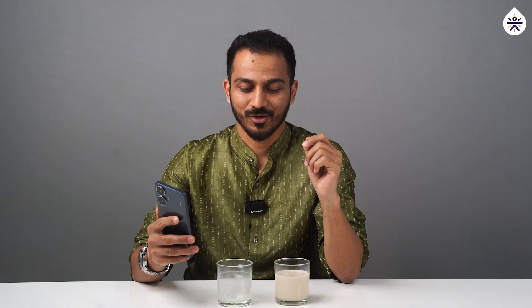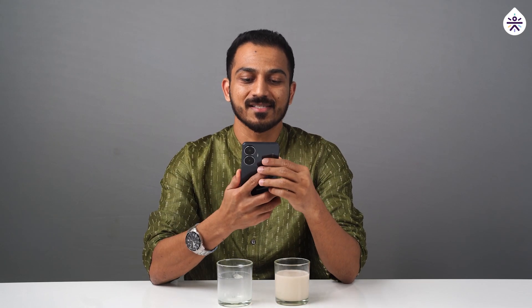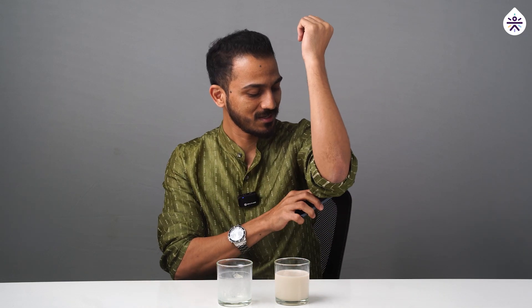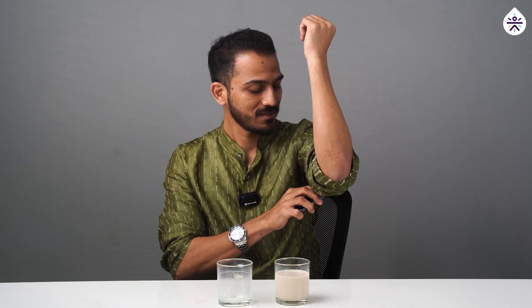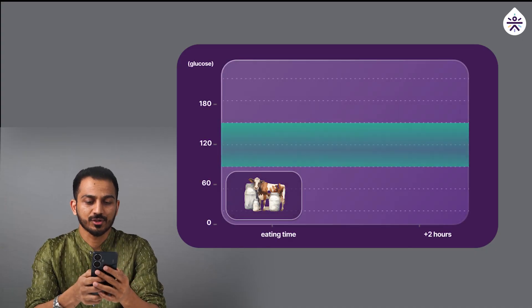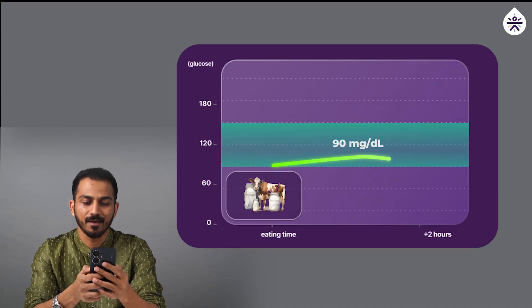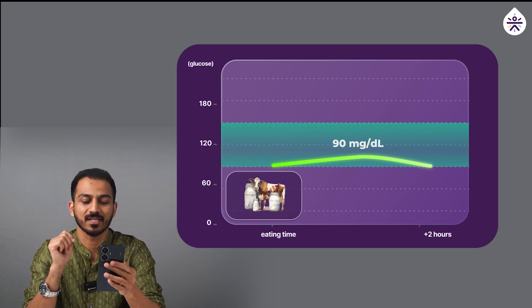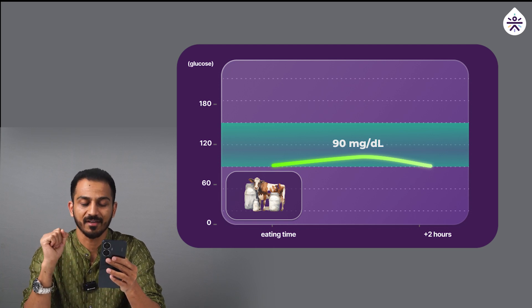Alright, so it's been 90 minutes since I had cow milk. I'll just scan and see what is my current sugar. Okay, so it shows 90 mg per dl, which means a 10 mg per dl increase in my sugar level after having cow milk.